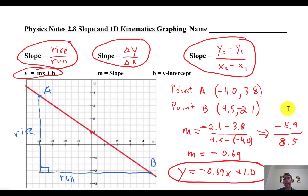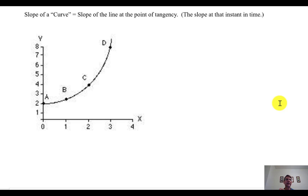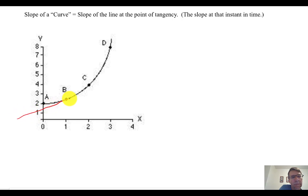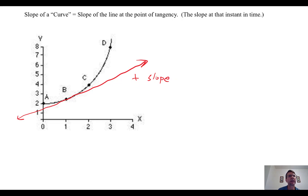That's a quick review. Now, curves technically don't have a single slope — they have a changing slope — but you can find the slope at any point by drawing a tangent line: a line that just barely nicks the curve. At point B, the tangent I just drew nicks the curve there, and that line has a slope. The slope of that tangent line is the slope of the curve only at point B — a positive slope.